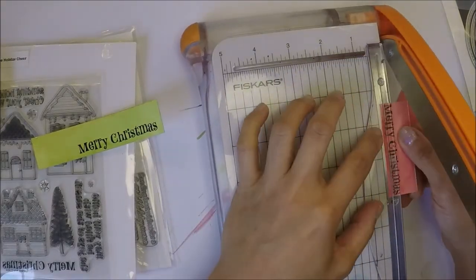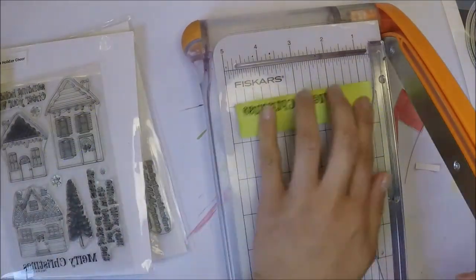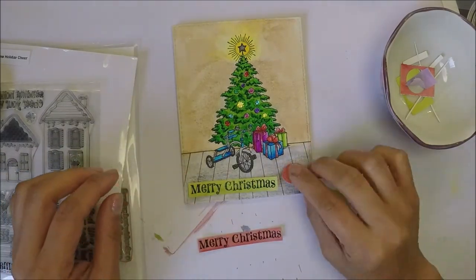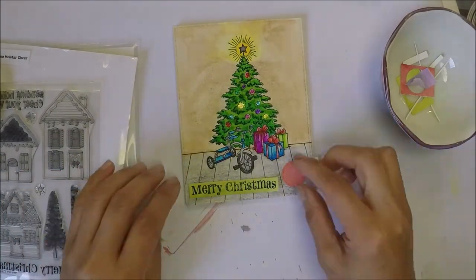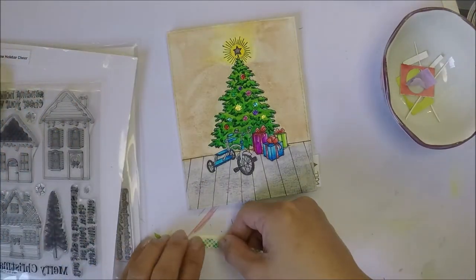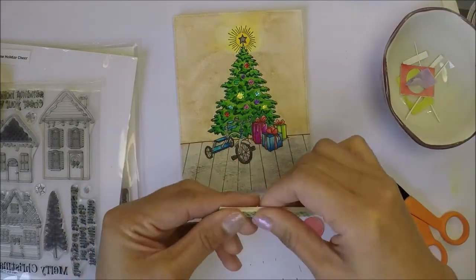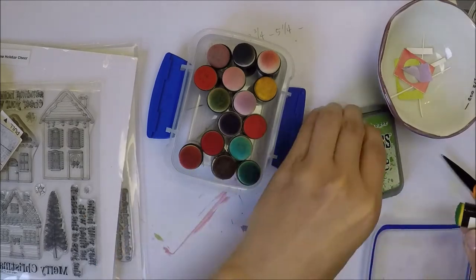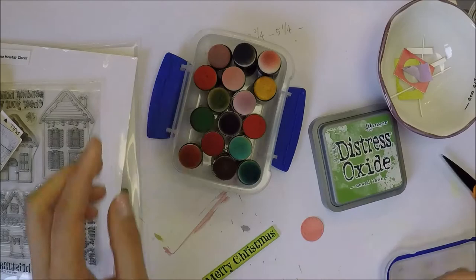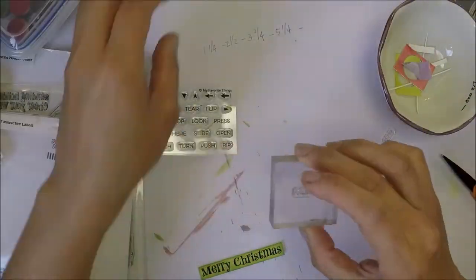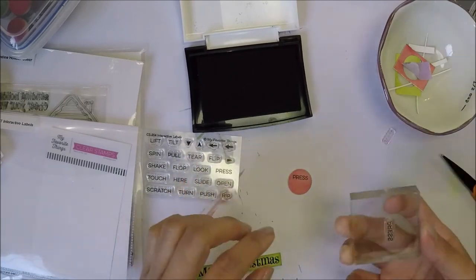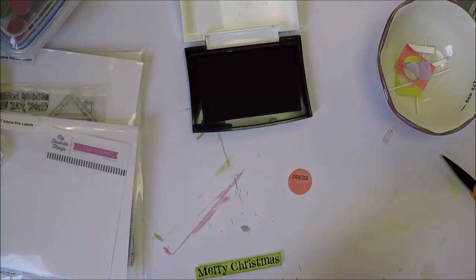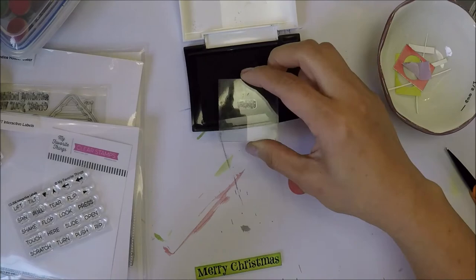And then I'm going to cut the sentiments with my Fiskars trimmer. And then I'm deciding which sentiment I want on my card. So I decided to use the green sentiment. I also die cut a stitch circle from the scraps that I have. Before I add the sentiment on the card, I'm going to distress the edges with Mowed Lawn Distress Oxide Ink. And then we'll go ahead and stamp 'press here' on the stitch circle that we die cut earlier. And I'm using My Favorite Things Interactive Labels stamp set.